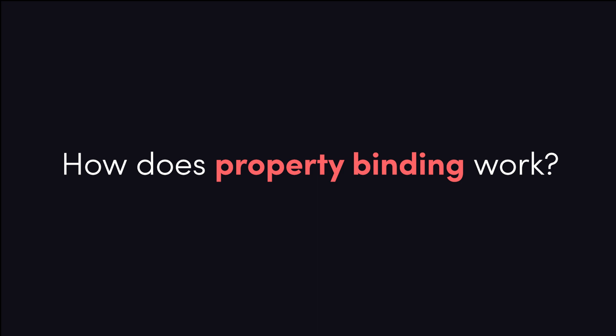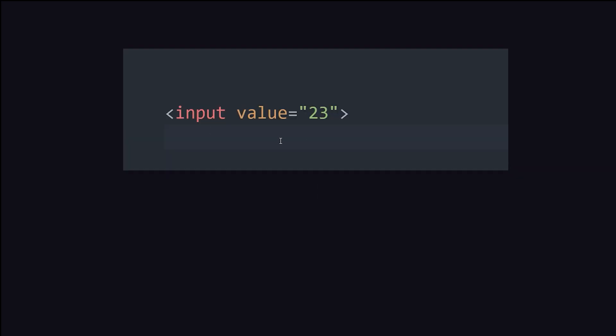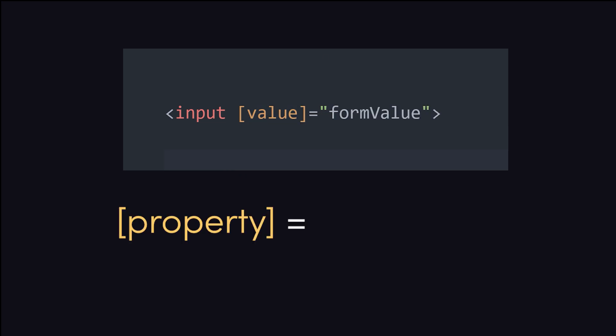Let's start with a quick review of how property binding works in Angular, then we'll examine several reproductions and resolutions for the issue. In an Angular template, we can bind to a property by wrapping it in brackets, then provide an expression on the right side. When the value in the expression changes, the bound property and UI will be updated automatically.